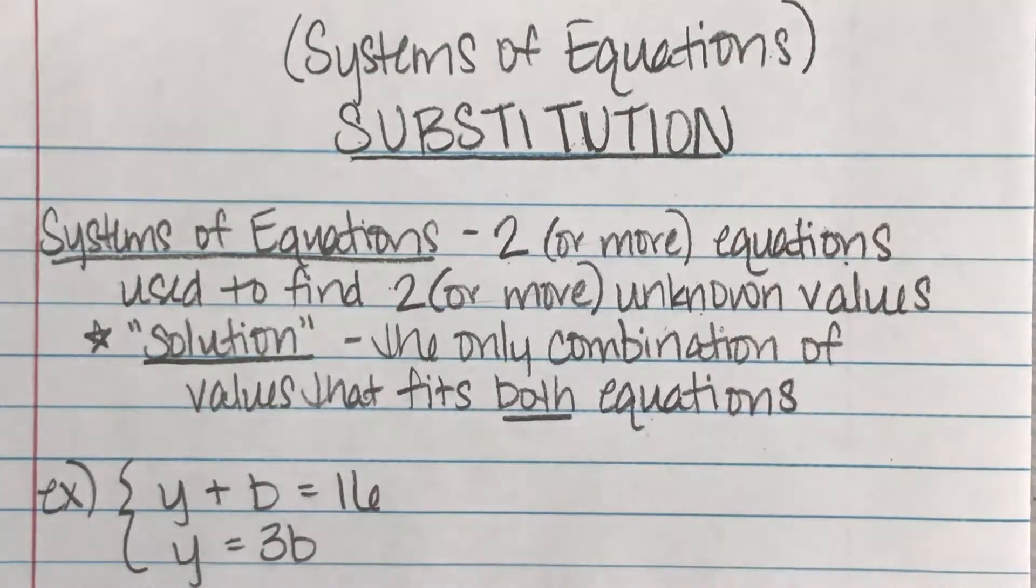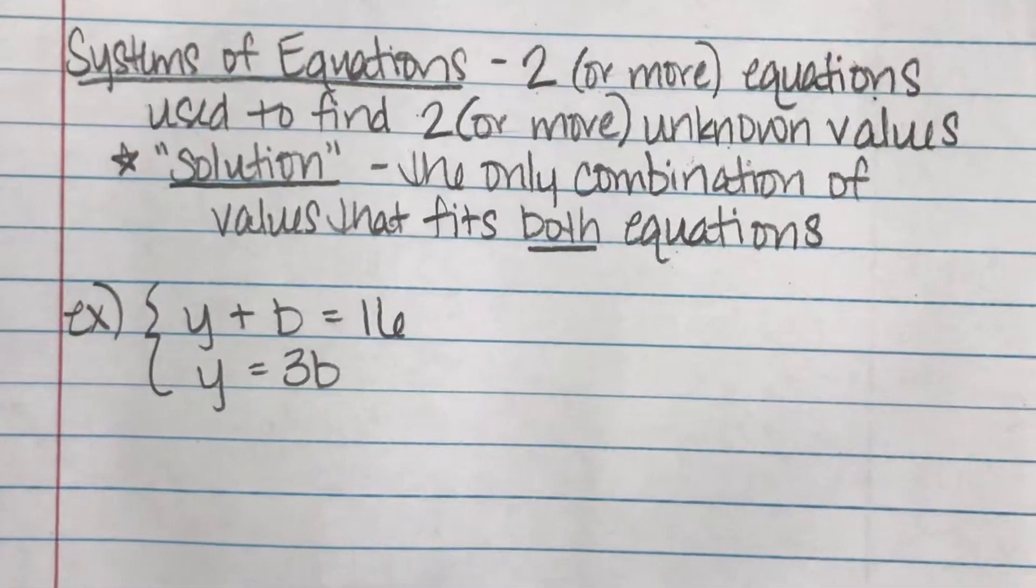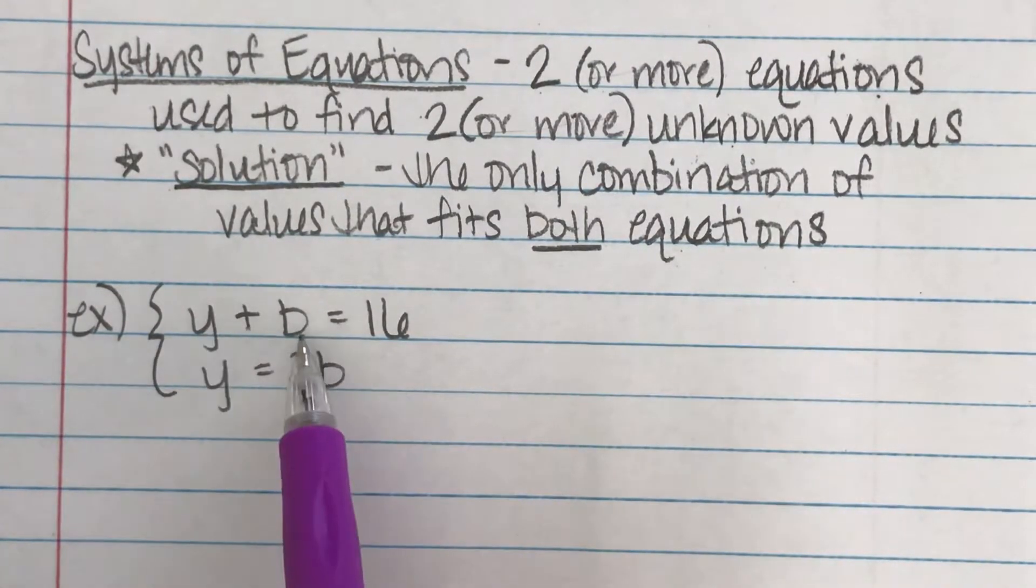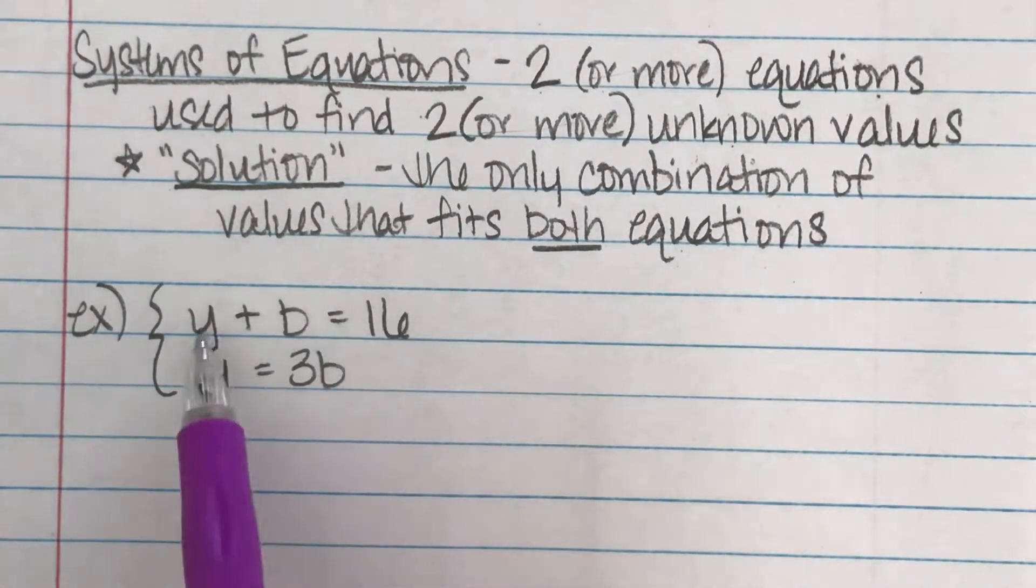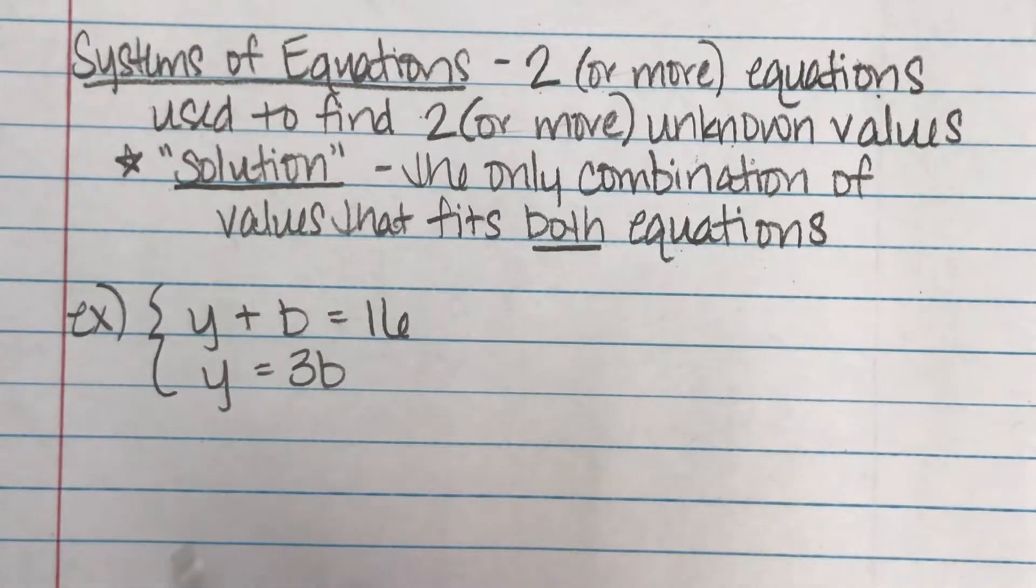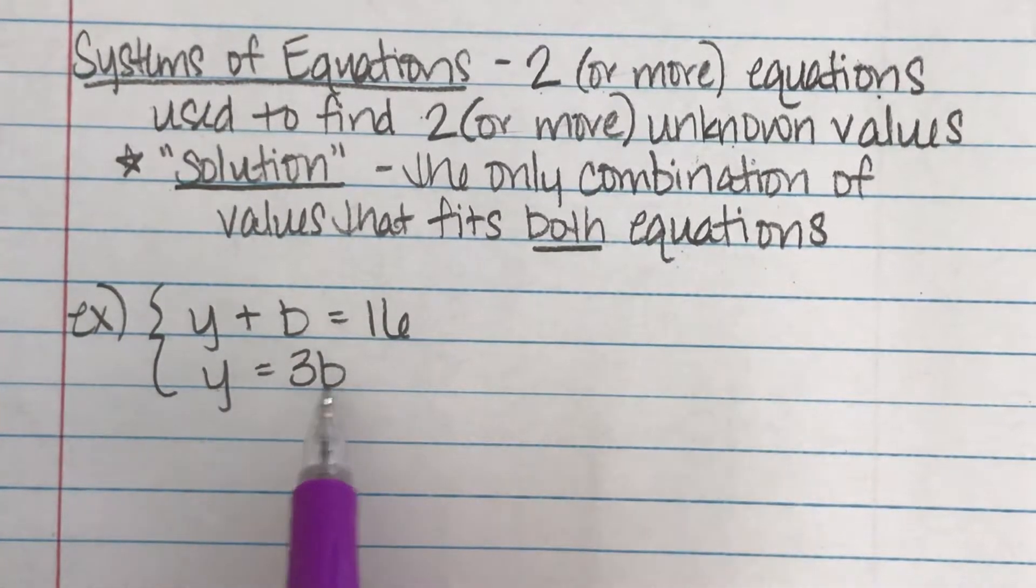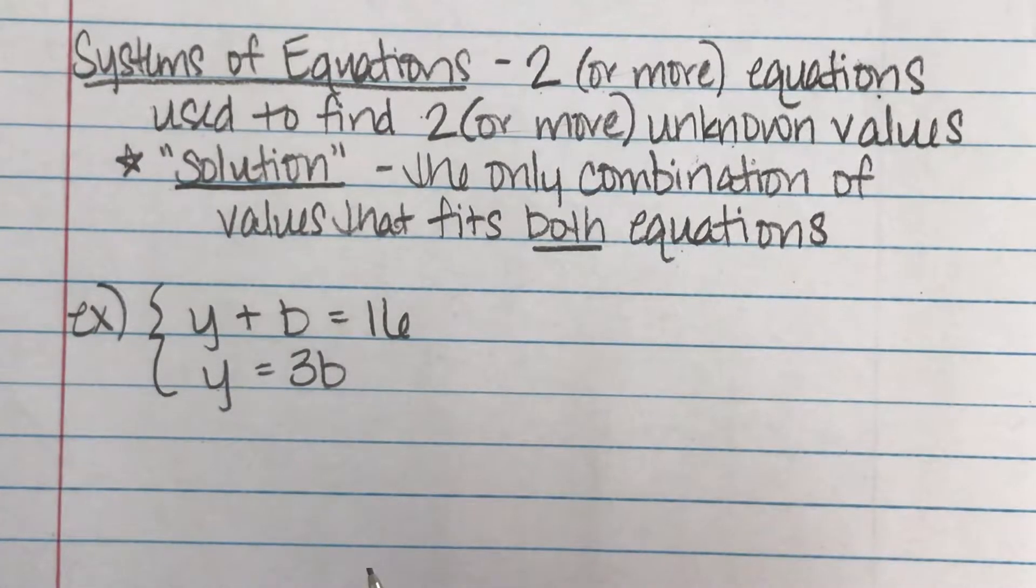Now tying that to Algebra, let's say I had a riddle that told me in the problem that the combined number of candies was 16, yellow plus blue equals 16. And then also in the riddle, it told me that the yellow candies equaled triple the blue number of candies.